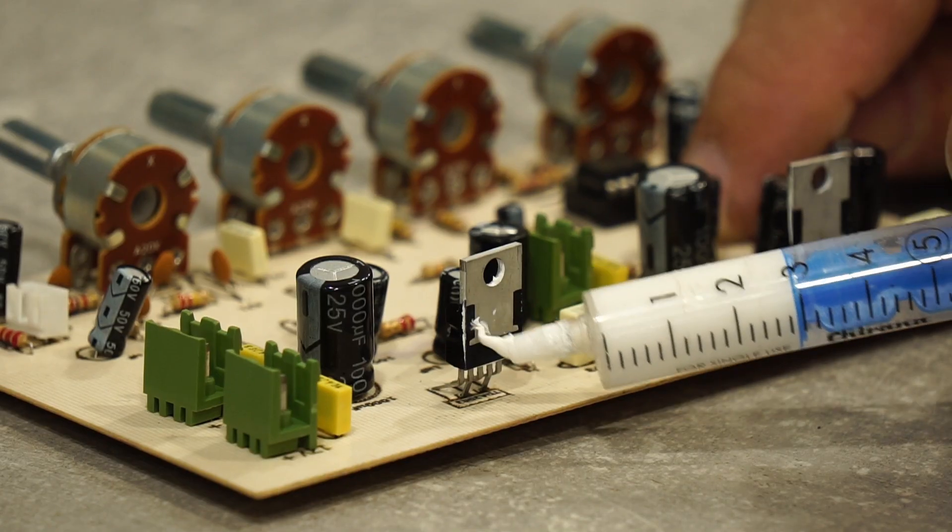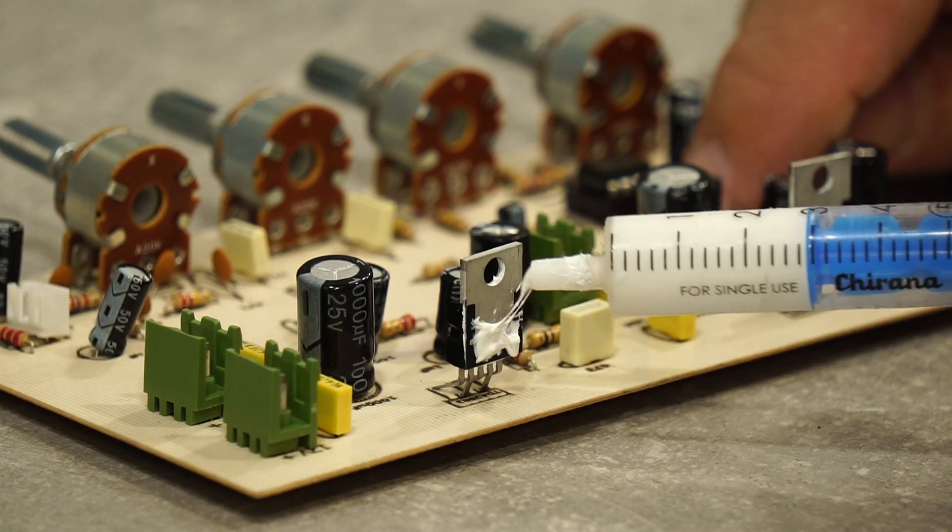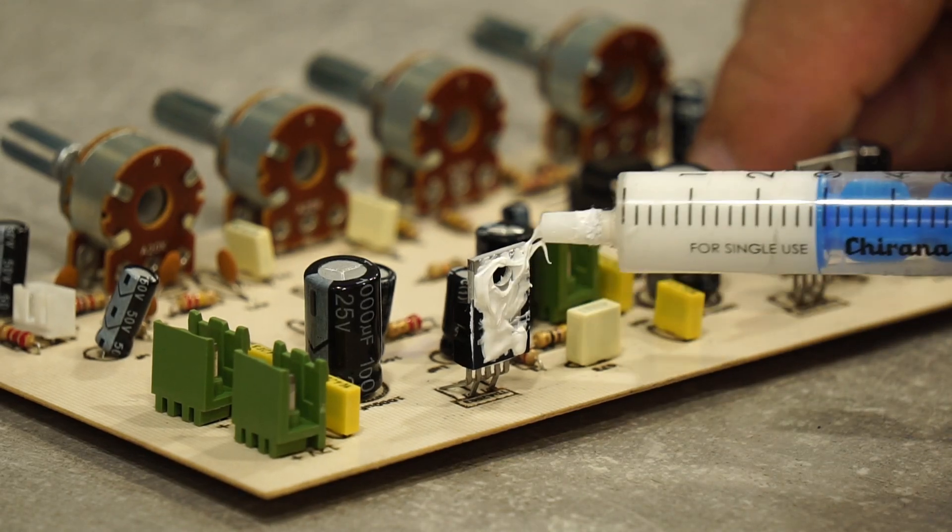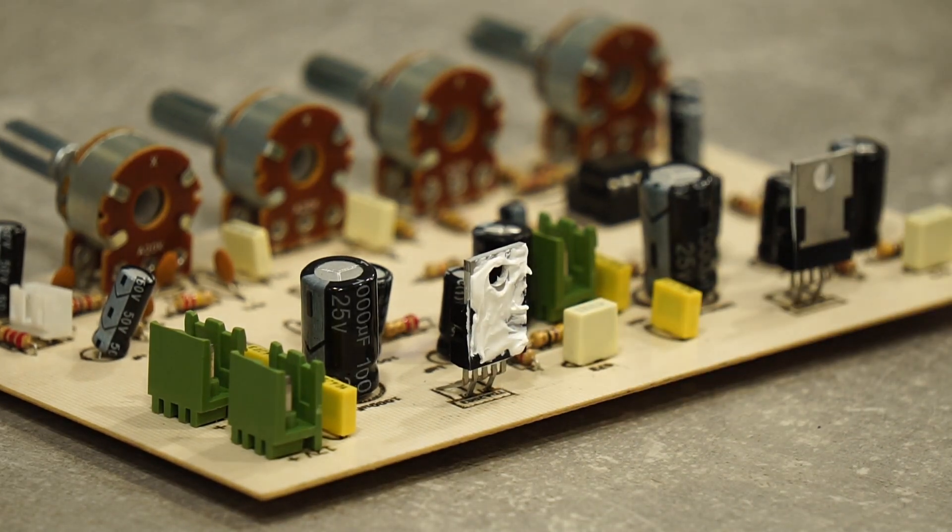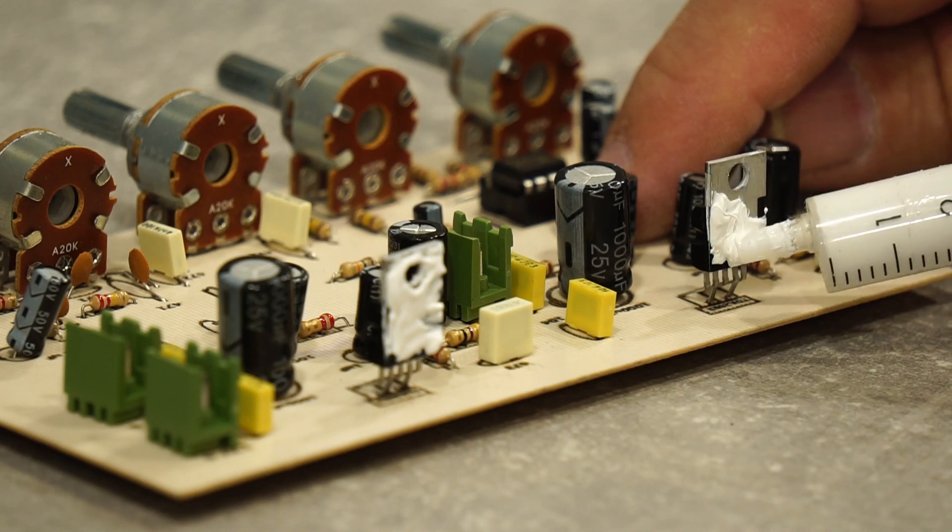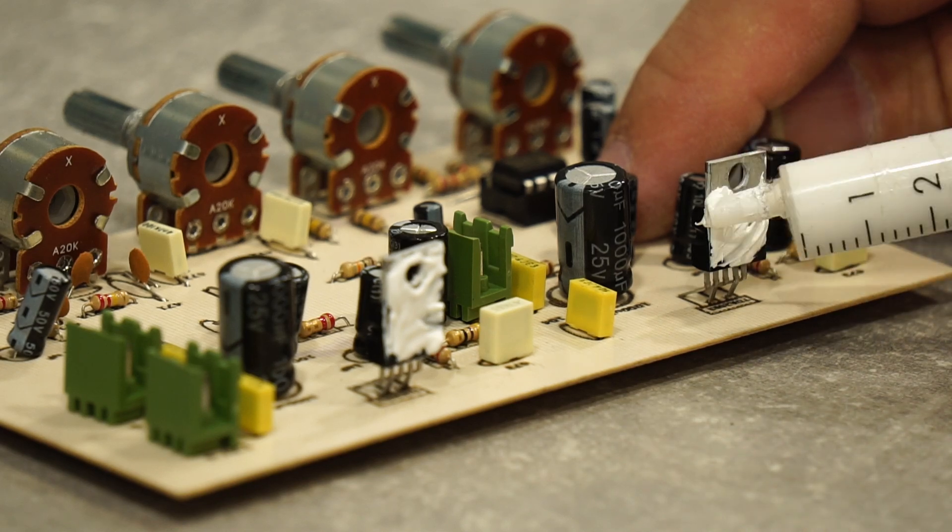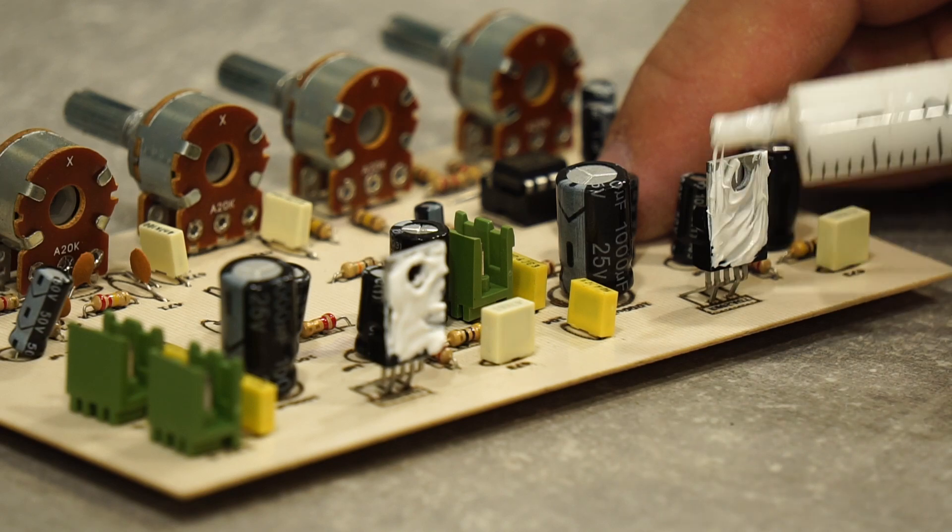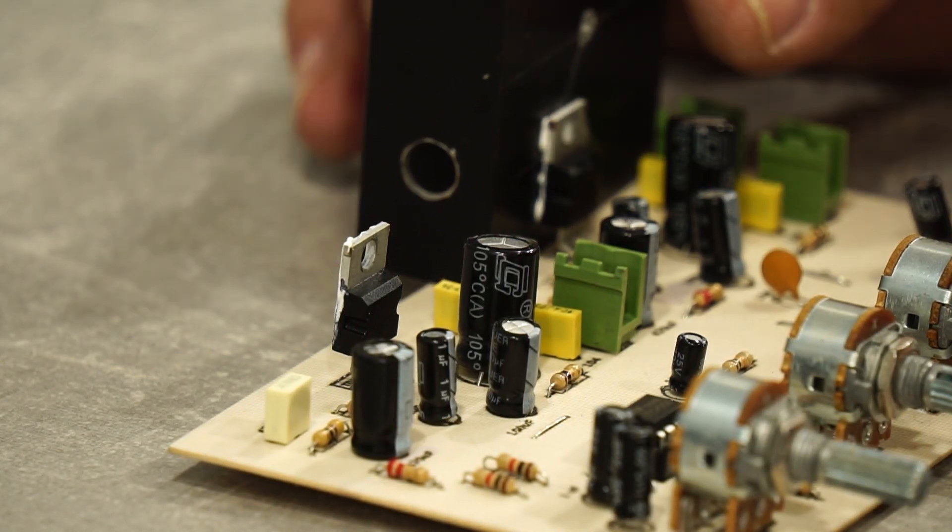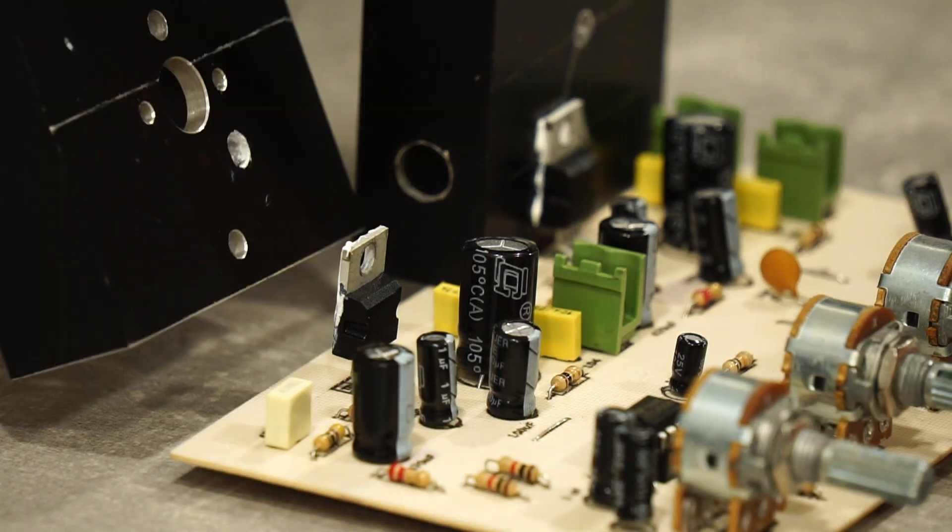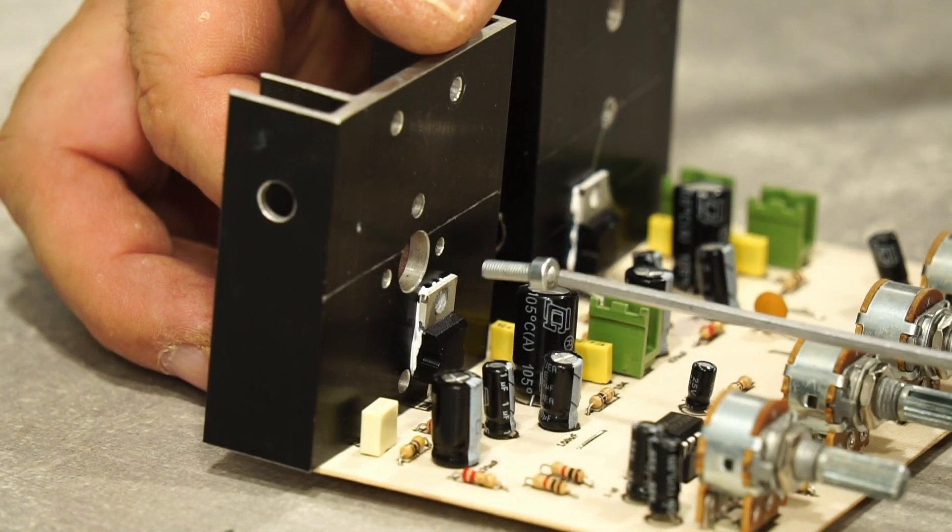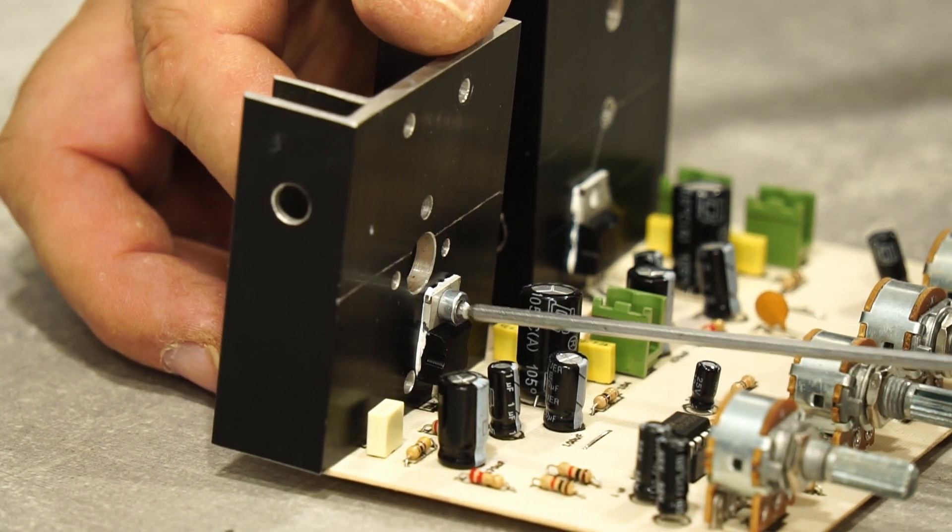I'm applying thermal paste to the TDA2003 integrated circuits. They generate a lot of heat during operation, so good cooling is necessary. I'm placing the aluminum cooling heatsinks. I'm attaching the mounting hardware and tightening it to the aluminum heatsink.